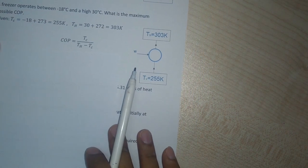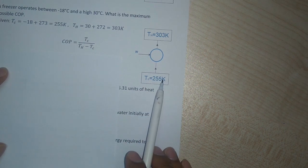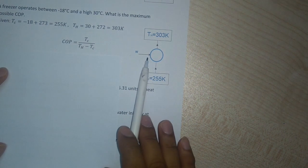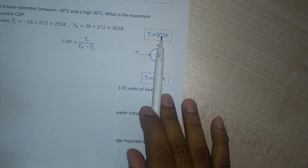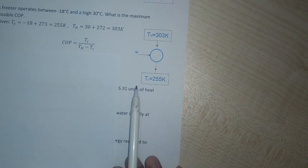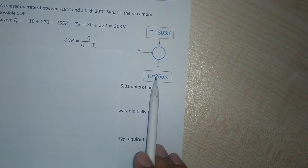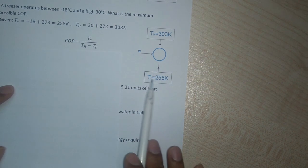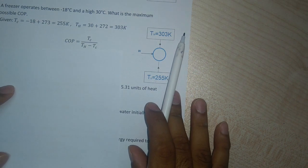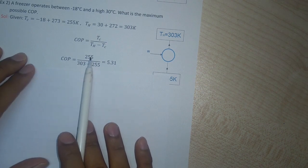Let us consider the schematic of the refrigerator. We have a low-temperature reservoir which is usually the freezer. We give in some work input, and some heat is taken out from the freezer and given to the atmosphere or the higher temperature reservoir. The refrigerator works by putting in something to be cooled — it gives some work input, takes out the heat from the freezer, and releases it into the atmosphere.